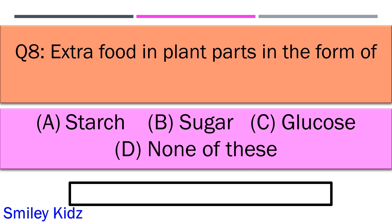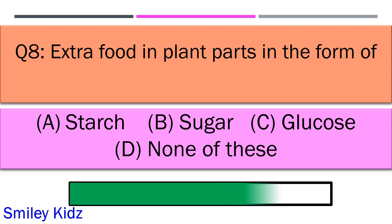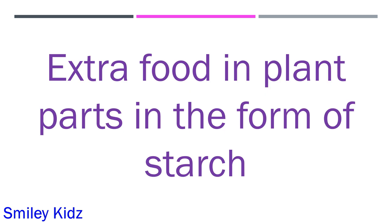Extra food in plant parts is stored in the form of option A starch, option B sugar, option C glucose, and option D none of these. Your time starts now. And your time is up and the right answer is option A starch.